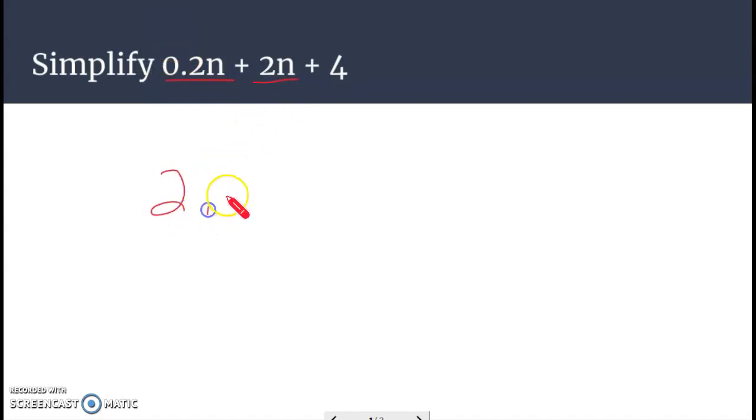We can add those together to give us 2.2n and notice there's really nothing to go with the 4. So our simplified answer here is 2.2n plus 4.